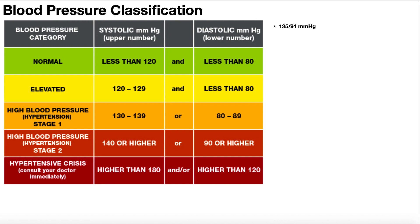When you're given a blood pressure, you have two numbers. The first one is always the systolic blood pressure. In this example, the systolic blood pressure would be 135 millimeters of mercury. The second number is always your diastolic blood pressure, and in this example it's 91 millimeters of mercury. Regardless of what patient you have, the systolic is always higher than the diastolic.